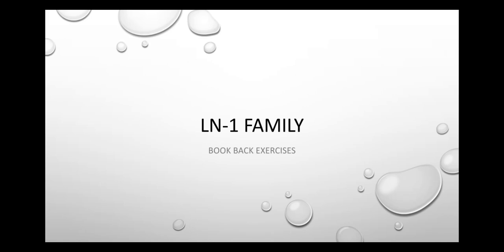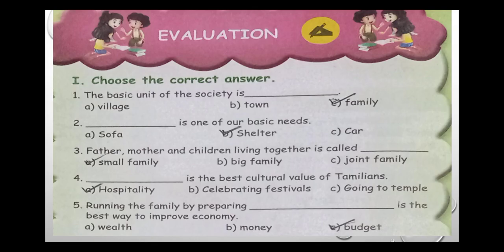Good afternoon students. In this video you are all going to learn Social Science Lesson 1: Family, book back exercise. Our first exercise is the evaluation part — choose the correct answer. The first question: the basic unit of society is dash. The answer is family. The basic unit of society is family.